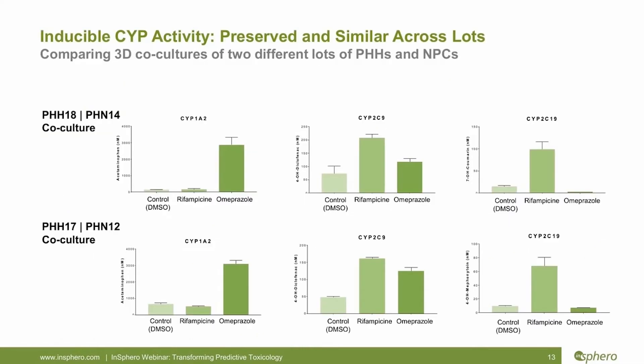A frequent question is: since InSphero uses primary hepatocytes, how different are different pooled lots from each other? Every time we transition to a new lot, we do extensive characterization comparisons, including CYP activities, ATP levels, and CYP induction capabilities between lots. The two rows shown represent two different donor combinations, and we've tested CYP inducers rifampicin and omeprazole for their effects on respective target CYP enzymes. These measurements are important not just for CYP induction screening, but to show that the important nuclear receptors — PXR, AHR, and CAR — are still appropriately expressed and functioning, unlike in cell lines such as HepG2 where these nuclear receptors are diminished.